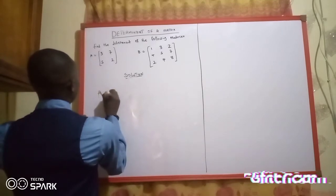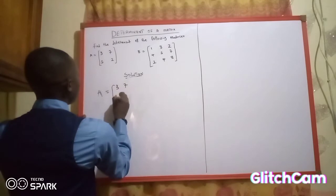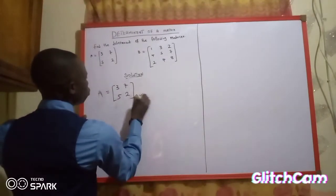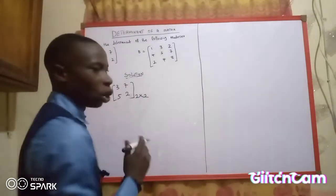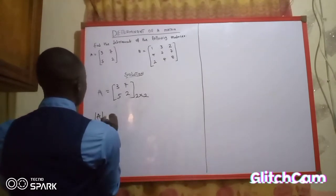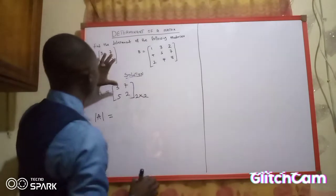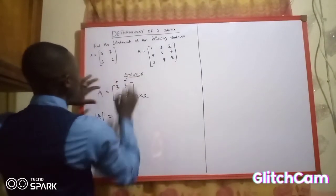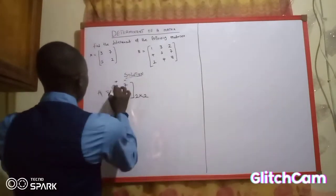Let us find the determinant of Matrix A first. I have 3, 7, 5, and 2, which is a 2 by 2 matrix — two rows and two columns. The determinant of A can be written as follows. Remember: the column for this 3 is positive, and this one is negative.